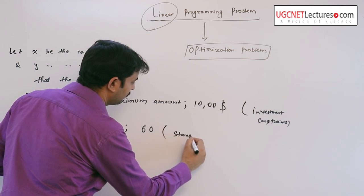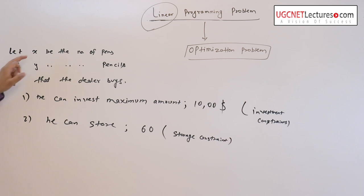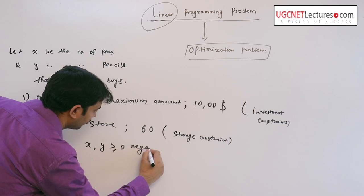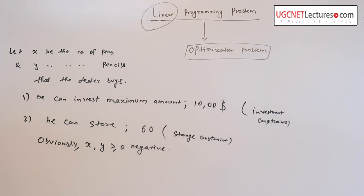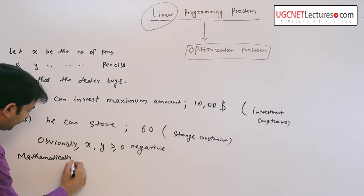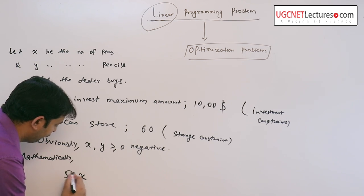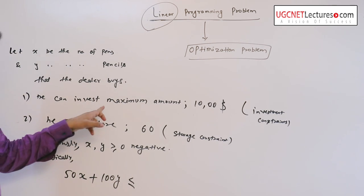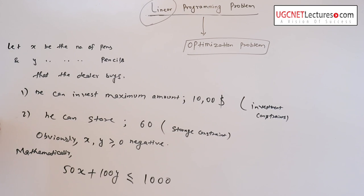Obviously x and y are non-negative. Mathematically it can be stated as the dealer wants to buy pens at 50 cents and pencils at 100 cents so that he can invest maximum amount $1000.